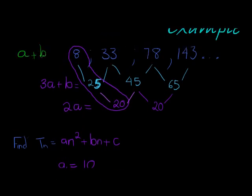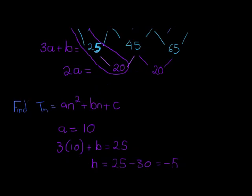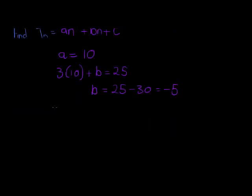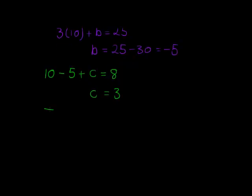And then finally, a plus b plus c must equal 8. a being 10, b being negative 5, so 10 minus 5 plus c must equal 8. That means 8 is equal to 10 minus 5 is 5, subtract 5 on both sides, and I find that c is equal to 3.